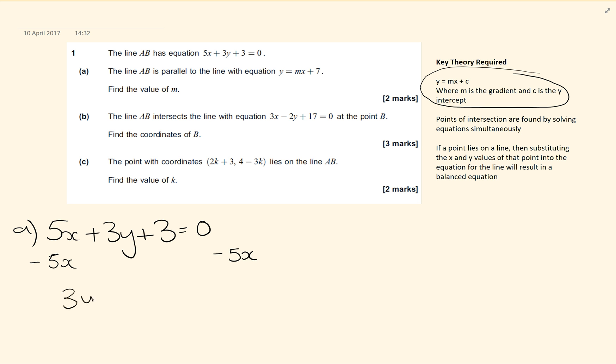Leaving me 3y plus 3 equals minus 5x. And then I'm going to subtract the 3 from both sides, so that leaves me 3y equals minus 5x minus 3.